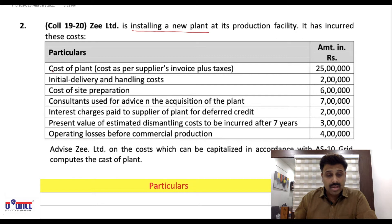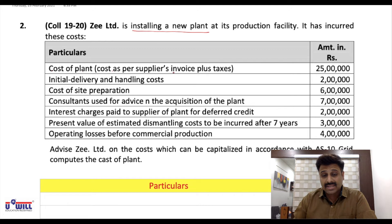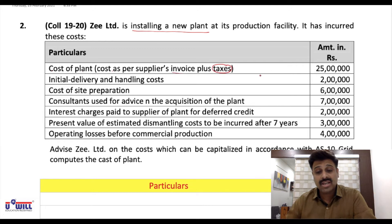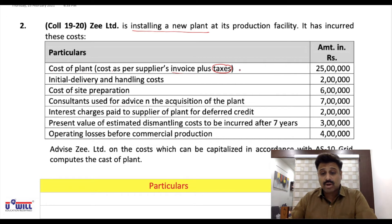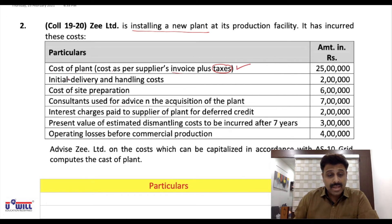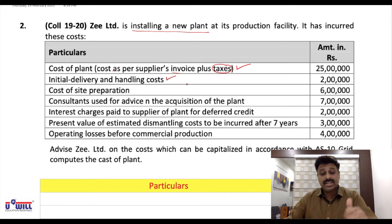Cost of the plant purchase itself will be included — that is the cost as per the supplier's invoice. Taxes will also be included if they are non-refundable; here we assume they are non-refundable, so this item will be included. Initial delivery and handling costs — we discussed in the last lecture — are also to be included.